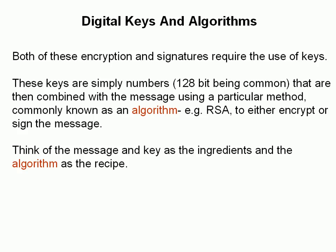Both encryption and digital signatures require the use of keys, and the key is simply a number. 128-bit is a common key size. The key is combined with a message using a particular method known as an algorithm, and RSA is a common algorithm used. You can think of the message and the key as the ingredients in cooking, and the algorithm as the recipe.